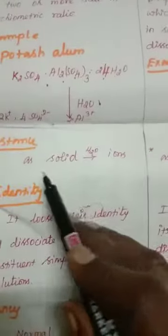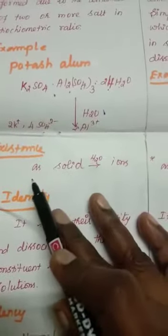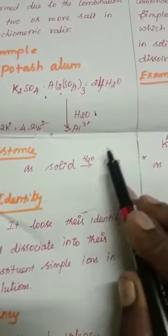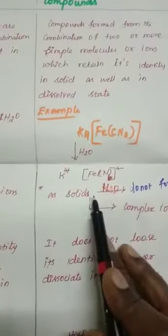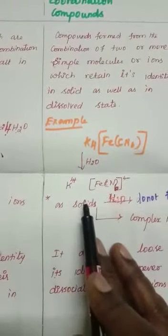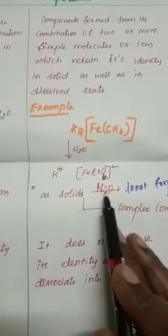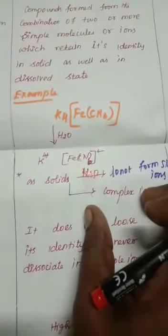Another difference is these double salts exist as solids. When they are dissolved in water, they form ions. Coordination compounds also exist as solids, but they do not form simple ions. When dissolved in water, they form complex ions.